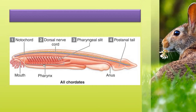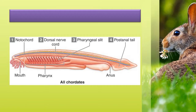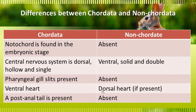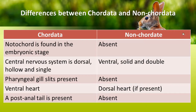Besides these, all chordates have some common features: they are bilaterally symmetric, triploblastic, and true coelom is present with organ system level of organization. They possess a post-anal tail, and they have a closed circulatory system with a ventral myogenic heart, except Amphioxus. Amphioxus does not possess the myogenic heart. Myogenic heart means the heartbeat is initiated by the muscles of the heart.